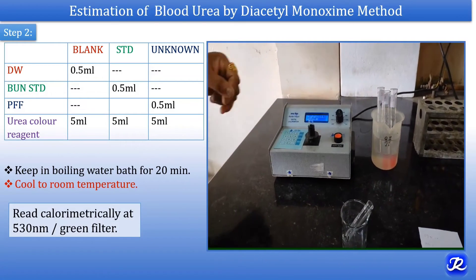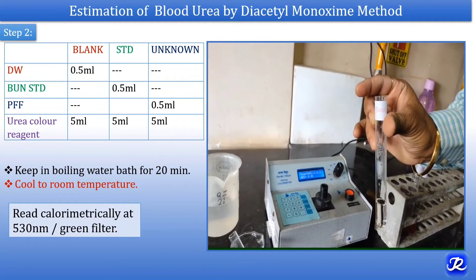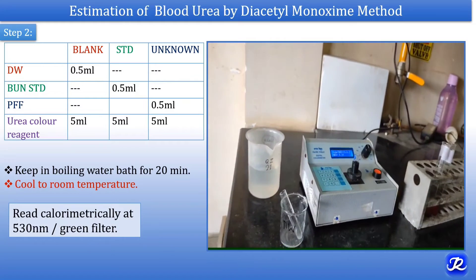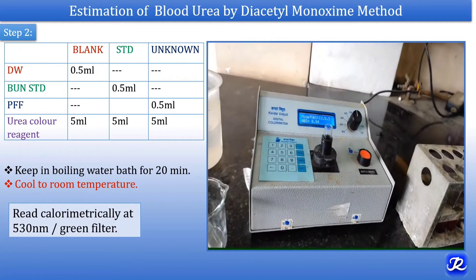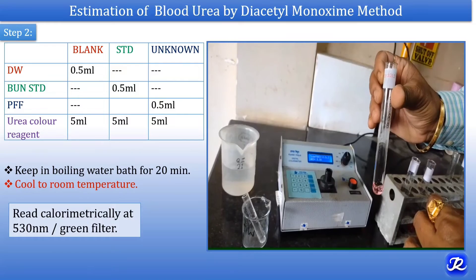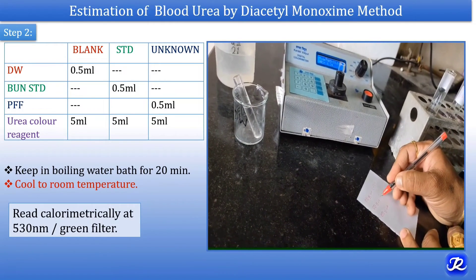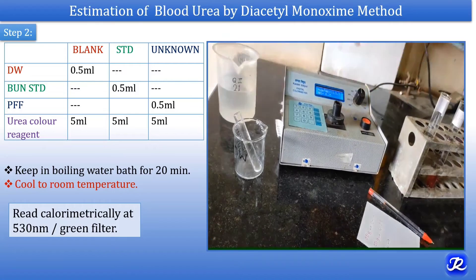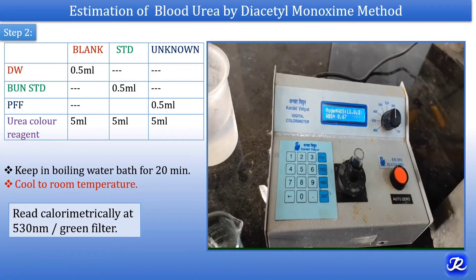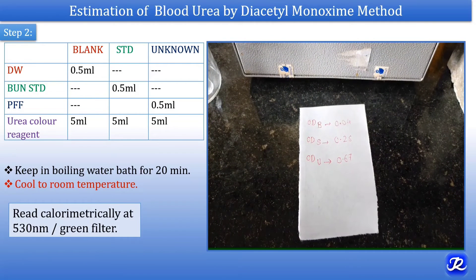First, adjust the colorimeter with the blank. Then measure the optical densities one by one. The OD of the blank is 0.04. The OD of the standard is 0.26. The OD of the unknown is 0.67. These are our observations for blank, standard, and unknown.